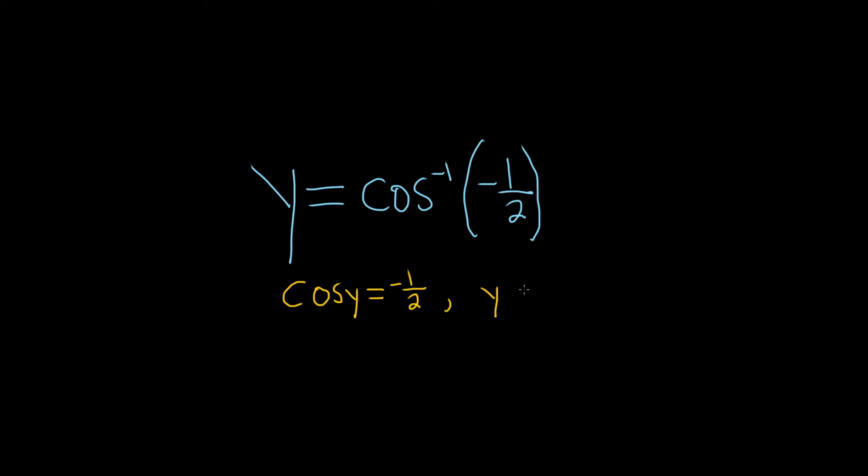So y is equal to this inverse cosine. That means that y is in the range of the inverse cosine. So y is in the interval for the range of inverse cosine, which is 0 to π. This is super important. It's all about knowing the range.